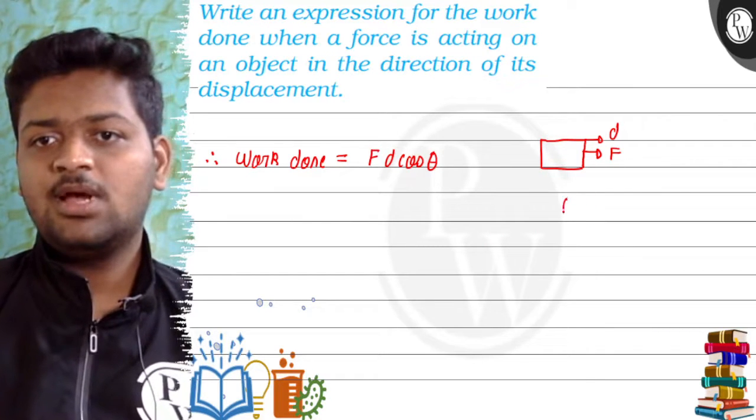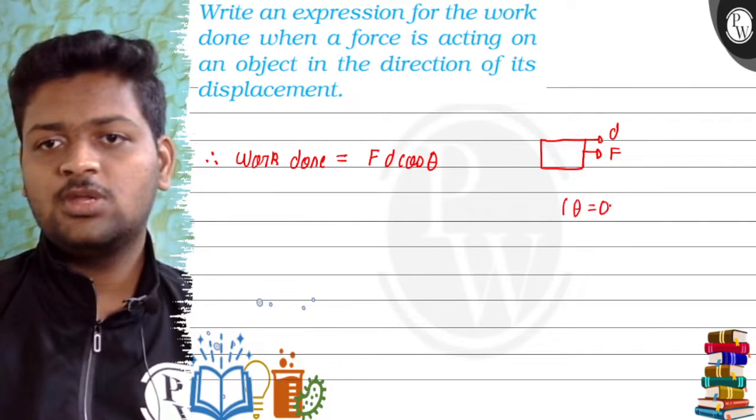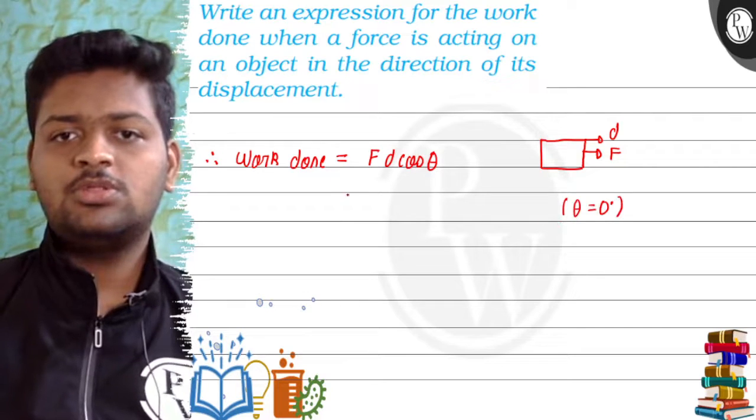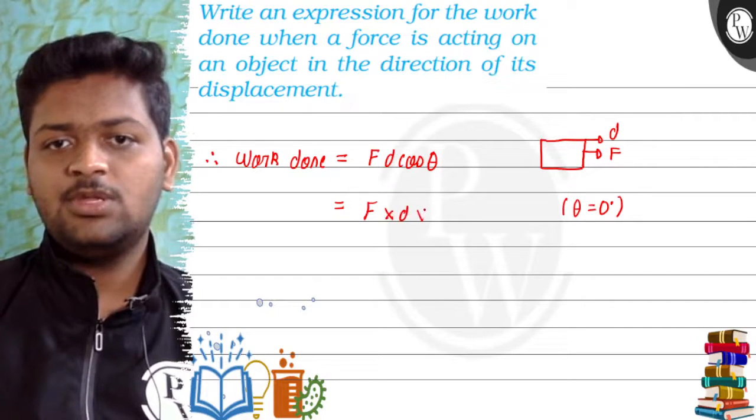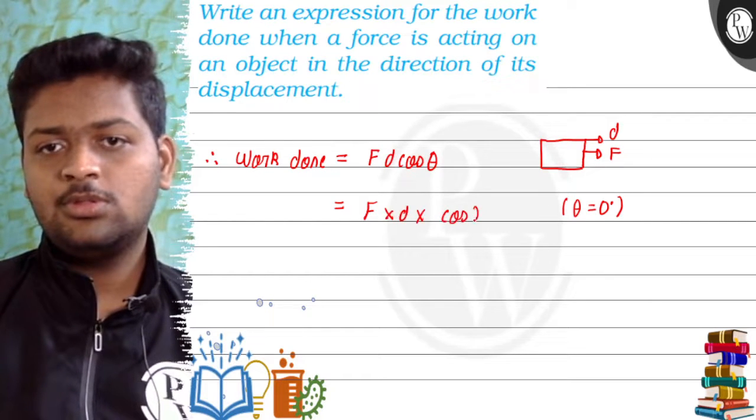The theta (angle) between them is zero degrees. So it becomes cos 0 degree, F into d into cos 0 degree.